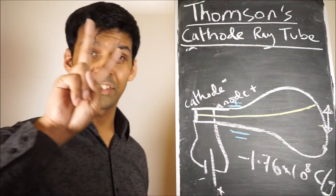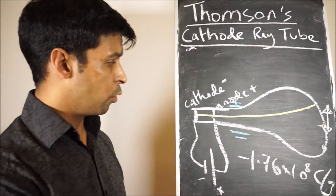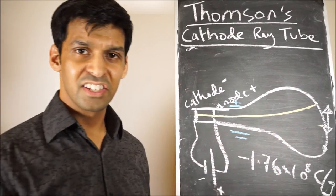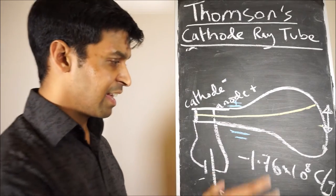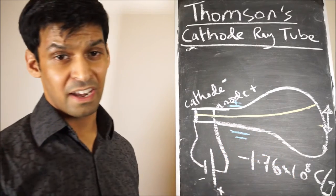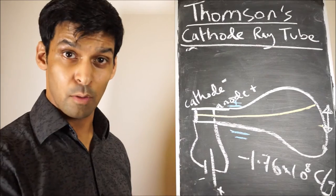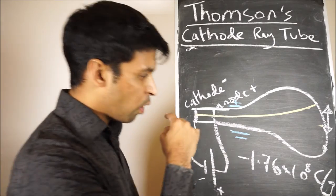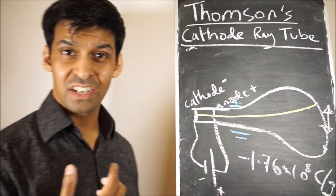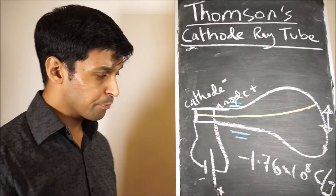So he found two things. First of all, it's negatively charged. Secondly, it's much smaller than an atom. Therefore, it is subatomic. What in fact this was, was an electron.